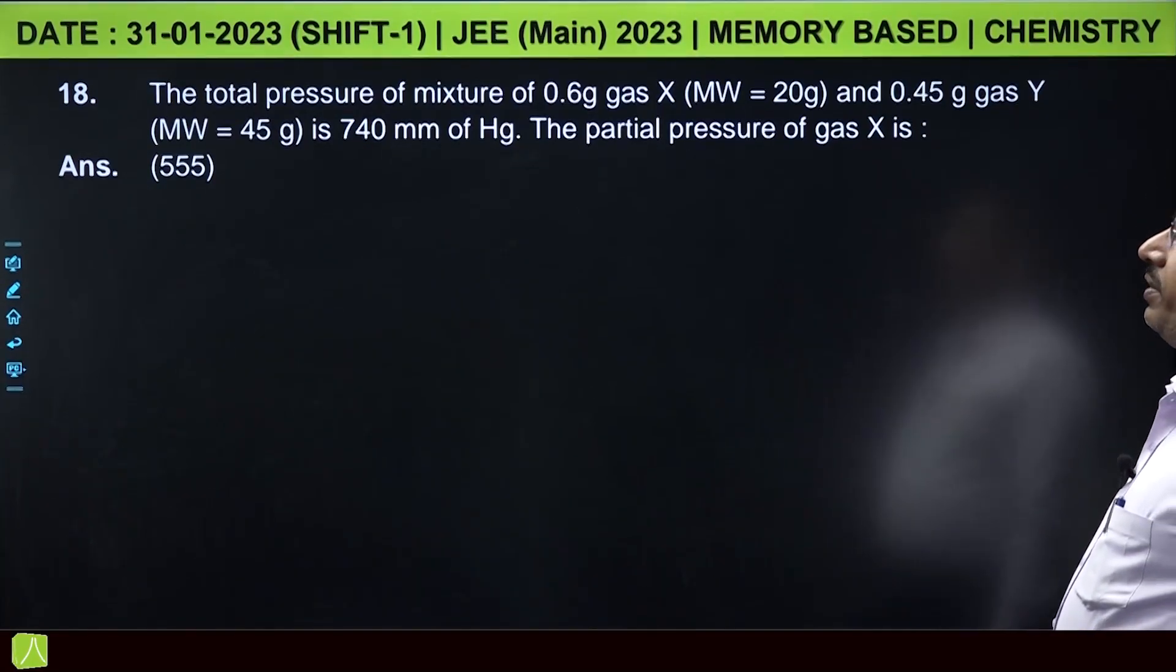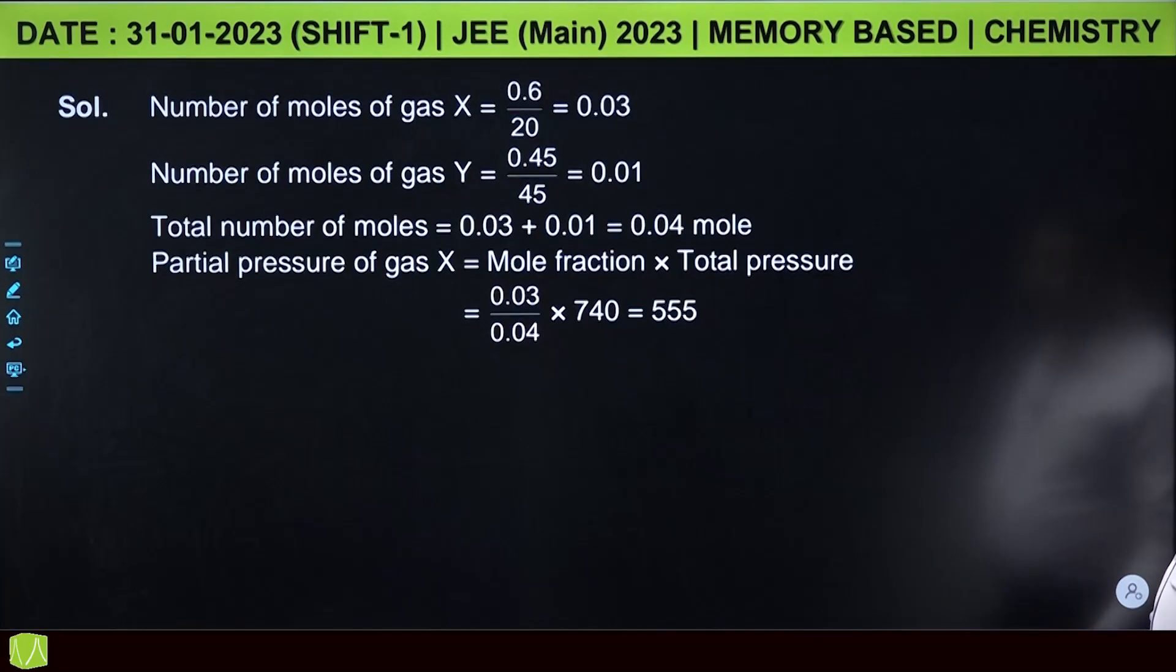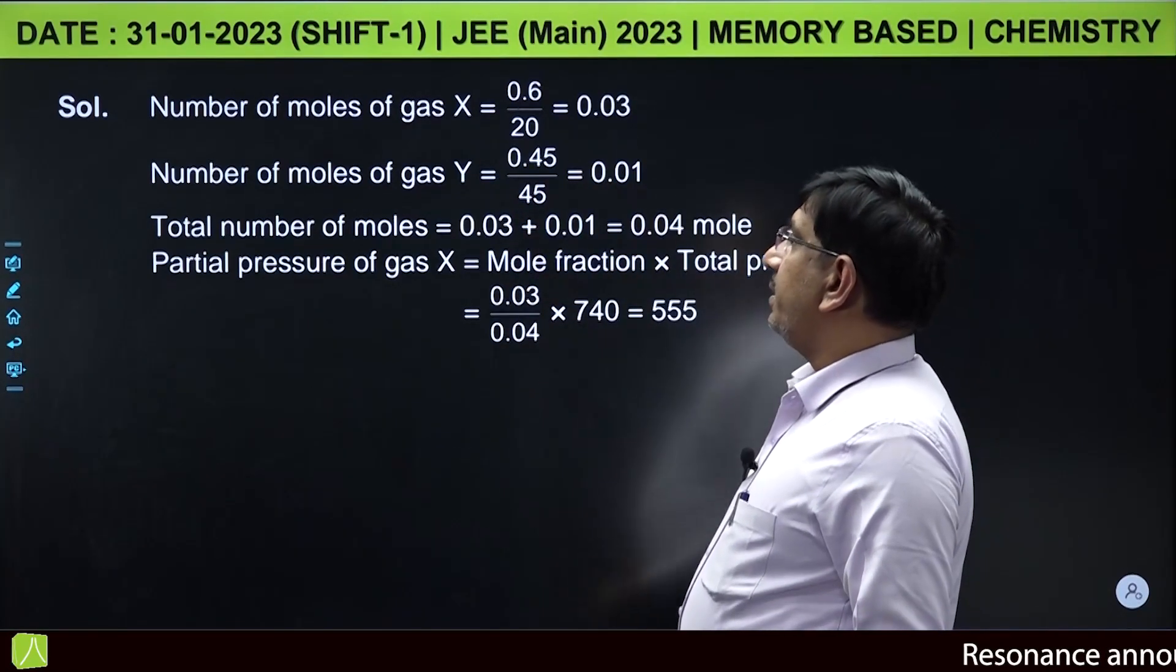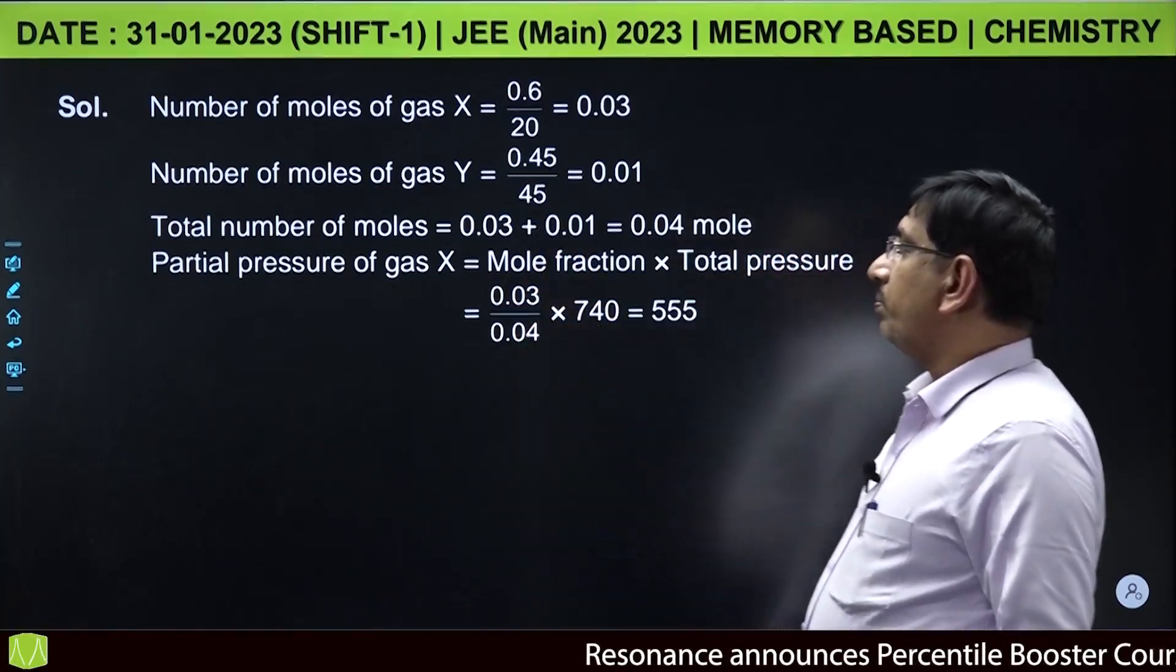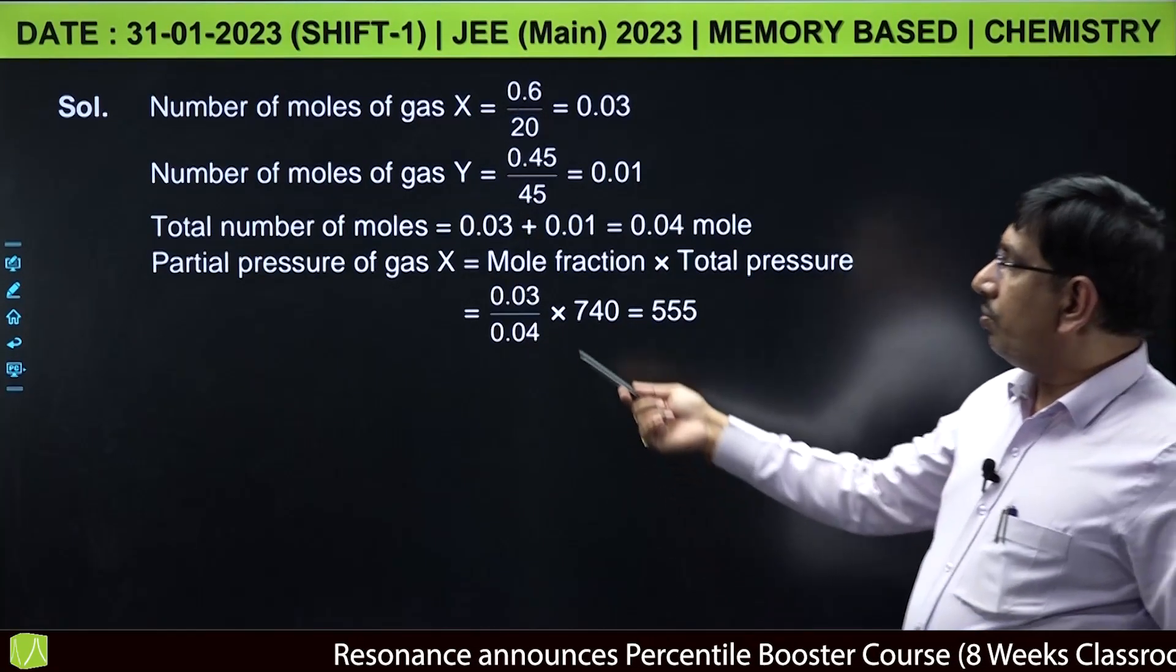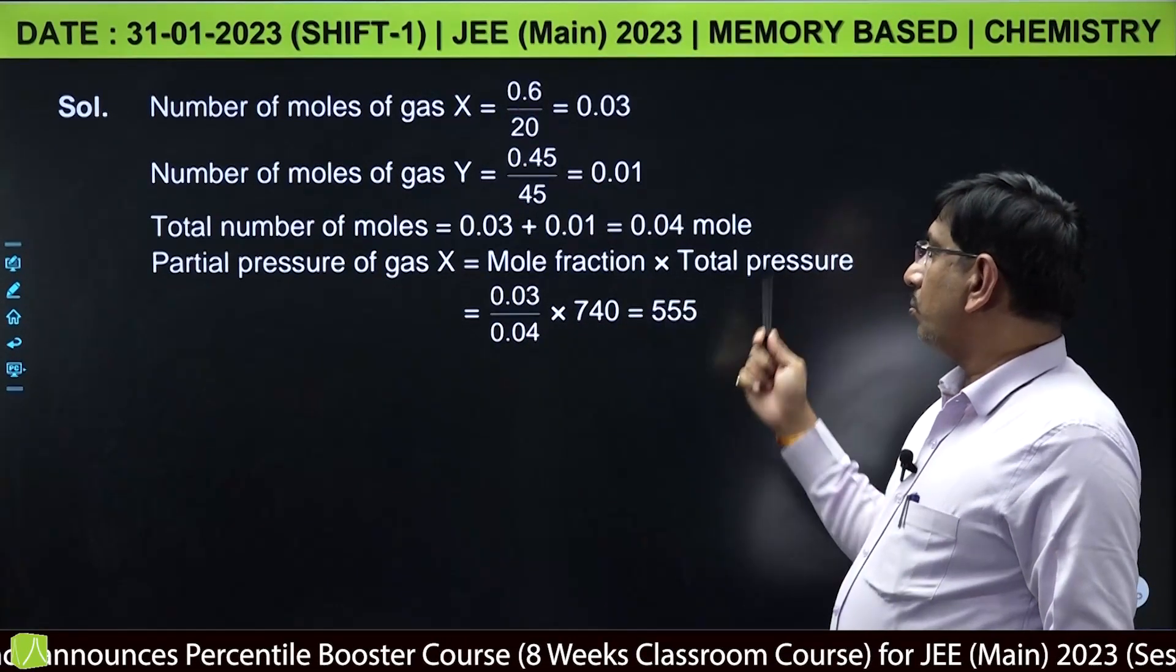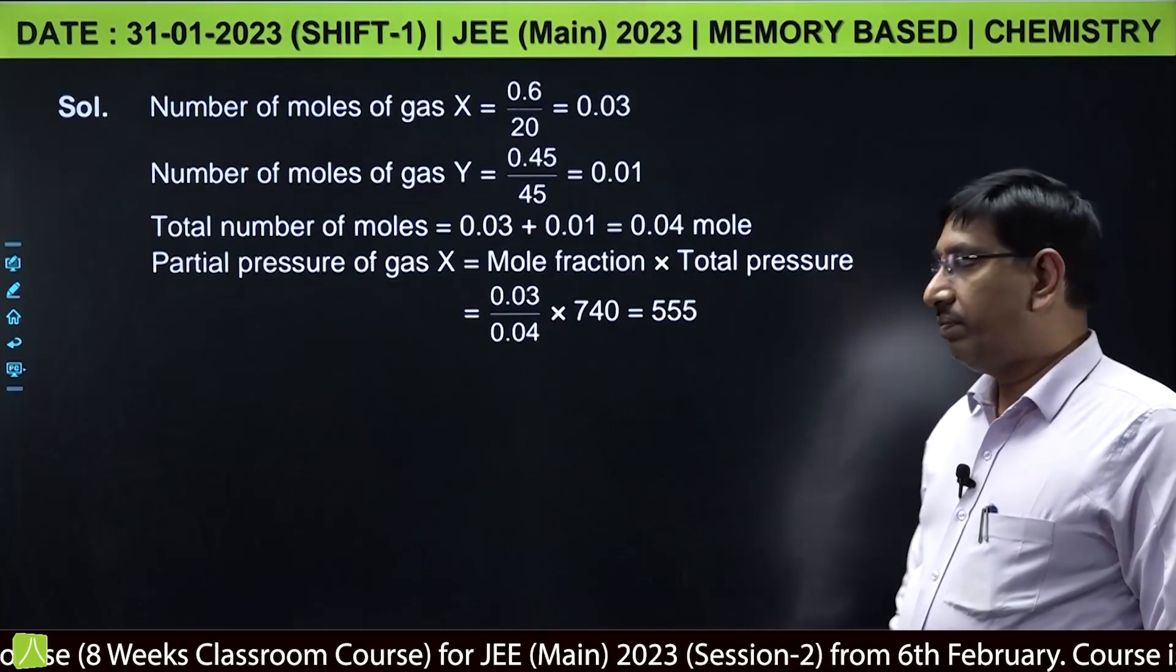The total pressure of mixture of 0.6 grams of gas X, molecular weight 20 gram, and 0.45 grams of gas Y, molecular weight 45 grams, is 740 mm of Hg. The partial pressure of gas X is: this is gas state, Dalton's law problem. Number of moles of gas X: 0.6 by 20 equal to 0.03. Number of moles of gas Y: 0.45 by 45 equal to 0.01. Total moles is 0.04 mole. Partial pressure of gas X is mole fraction into total pressure: 0.03 by 0.04 into 740. This on calculation you will get 555.